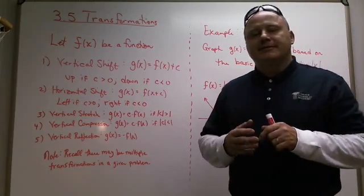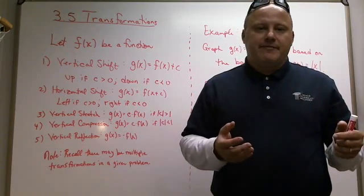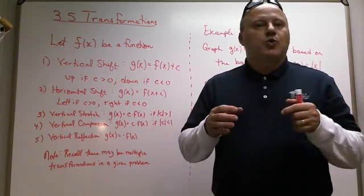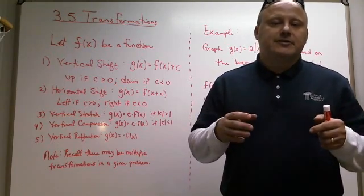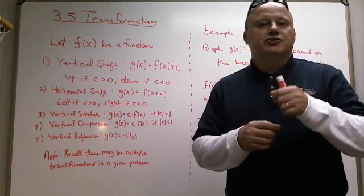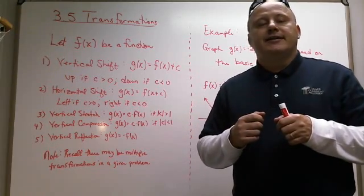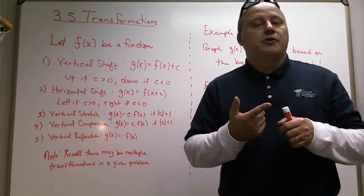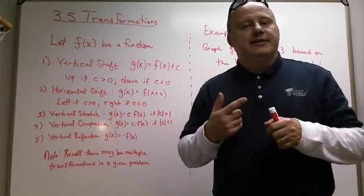What a transformation basically is, is taking a basic function, or basic graph, and moving it from one location to another location, or distorting the shape — but the shape doesn't change totally. It still has the same image, except it could be stretched or compressed. So for example, if you are dealing with an absolute value function, which is a V-shape, after it's been transformed, you will still see the V. Now that V may be upside down, but it's still a V-shape.